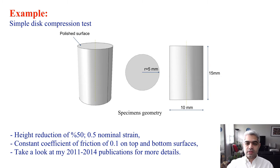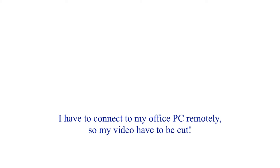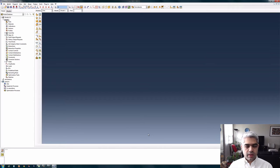I'm going to simulate a simple disc compression test. The height of the specimens is going to be 15 millimeters and the diameter is going to be 10 millimeters. We are going to reduce the height by 50%, so we'll apply a nominal strain of 0.5. A constant coefficient of friction of 0.1 will be used at the top and bottom surfaces, so we assume the specimen surfaces are lubricated. For the benefits of this test, you can look at my articles from 2011 to 2014.